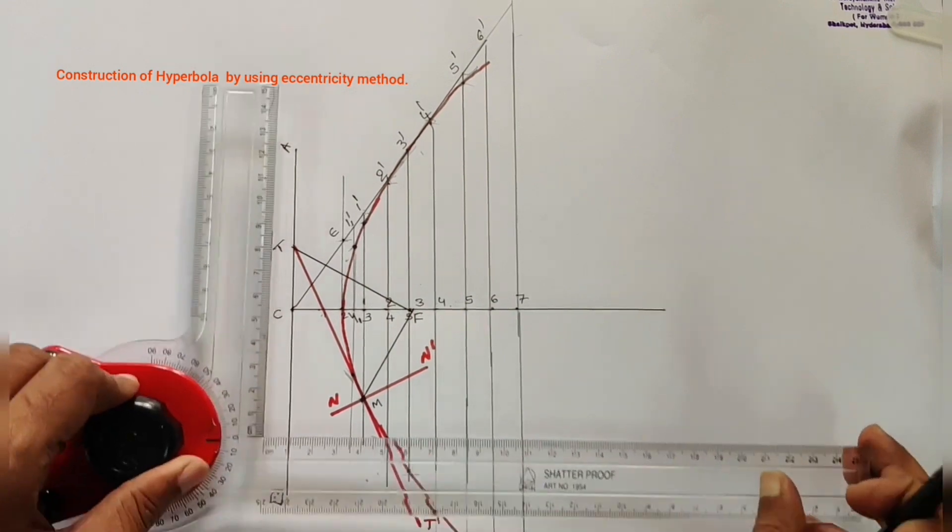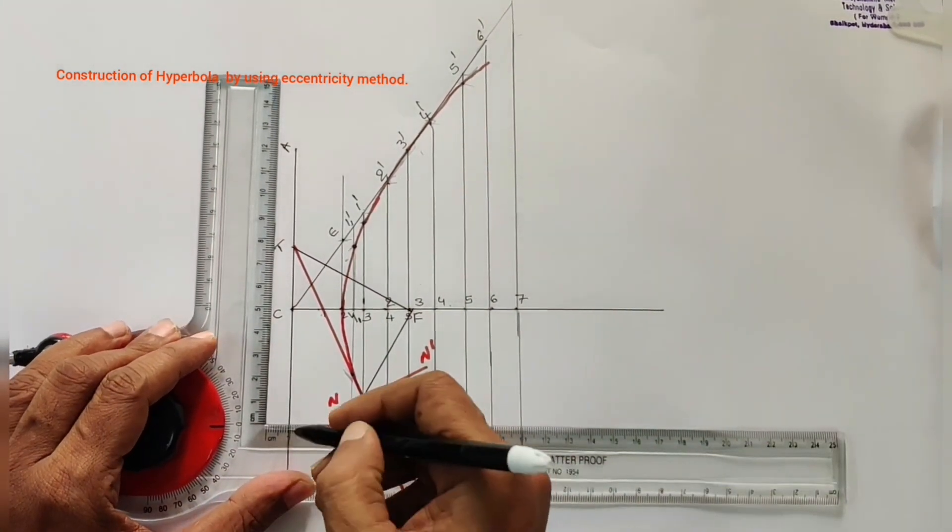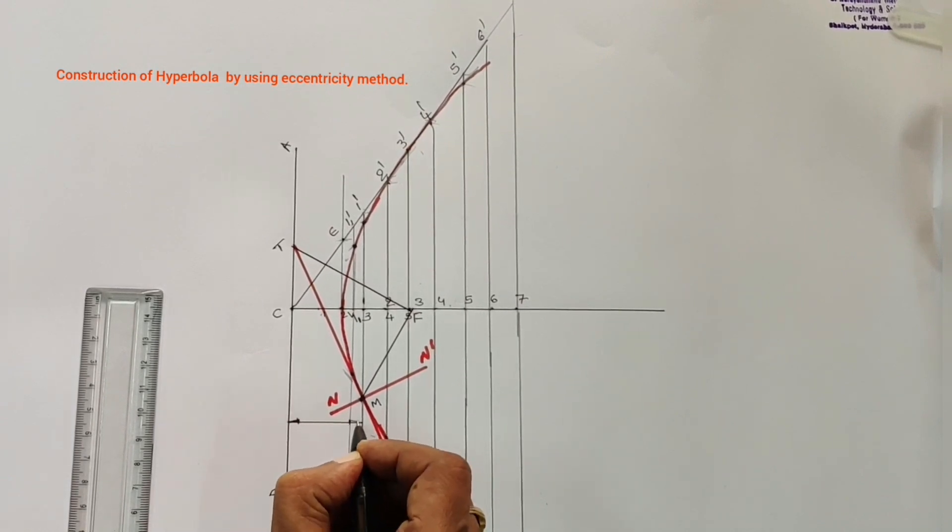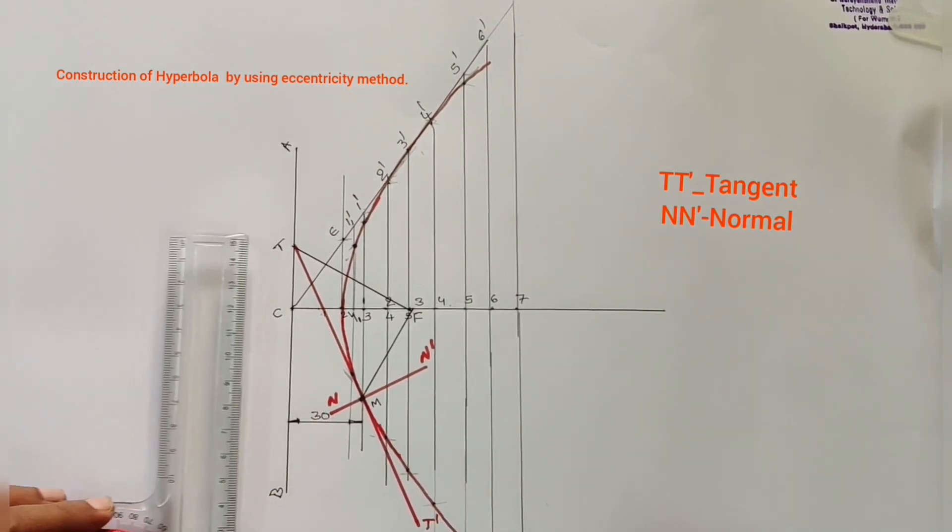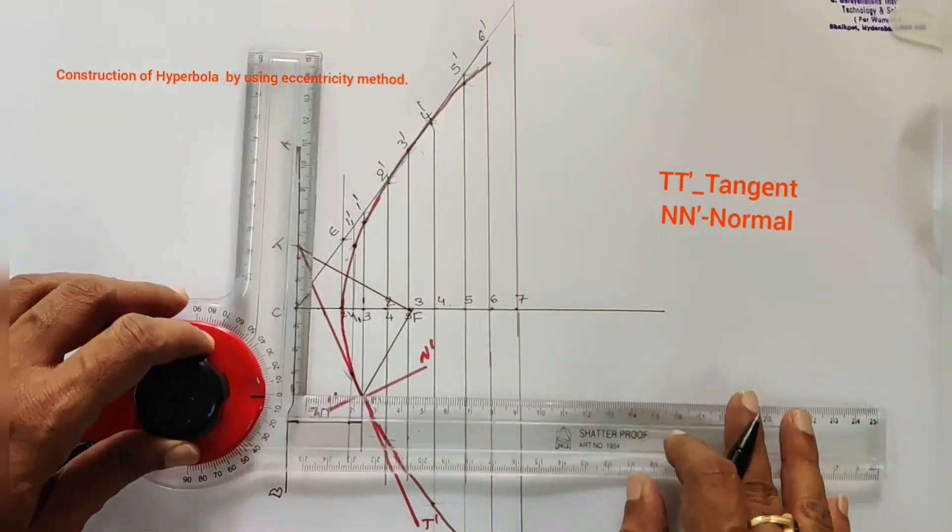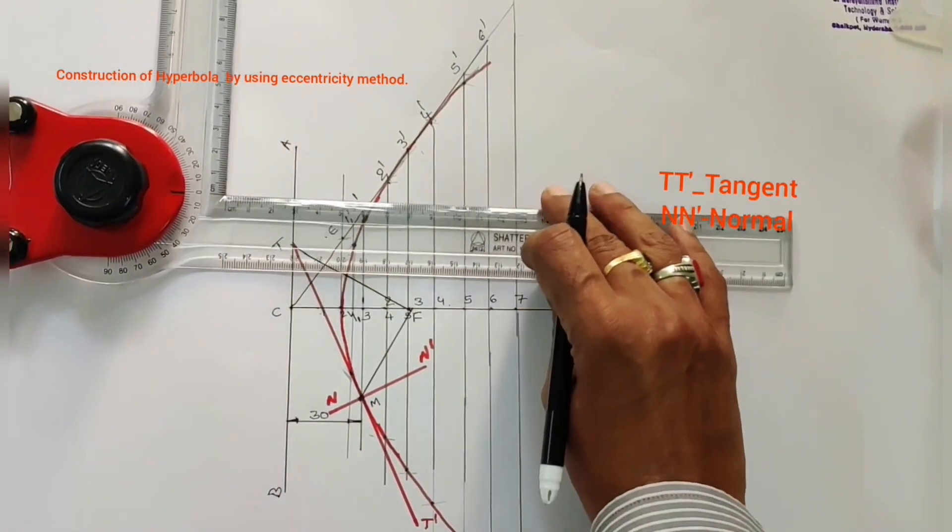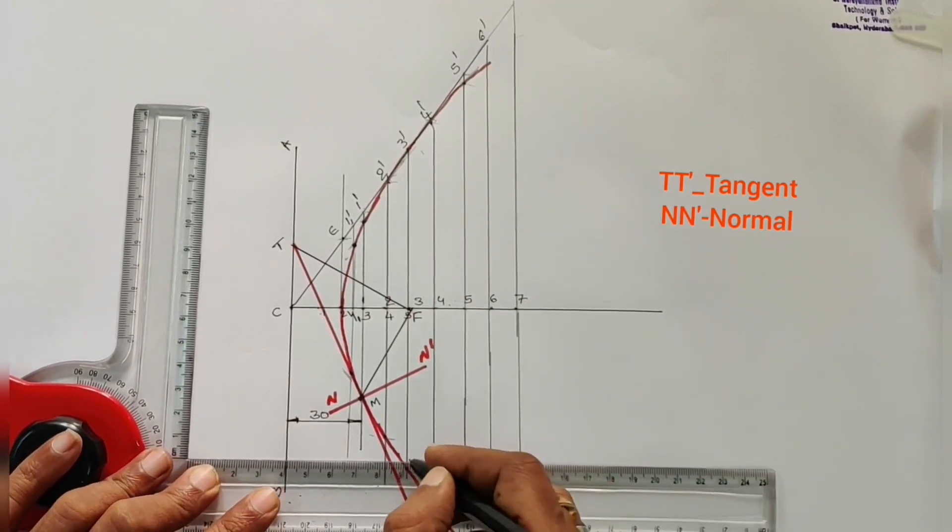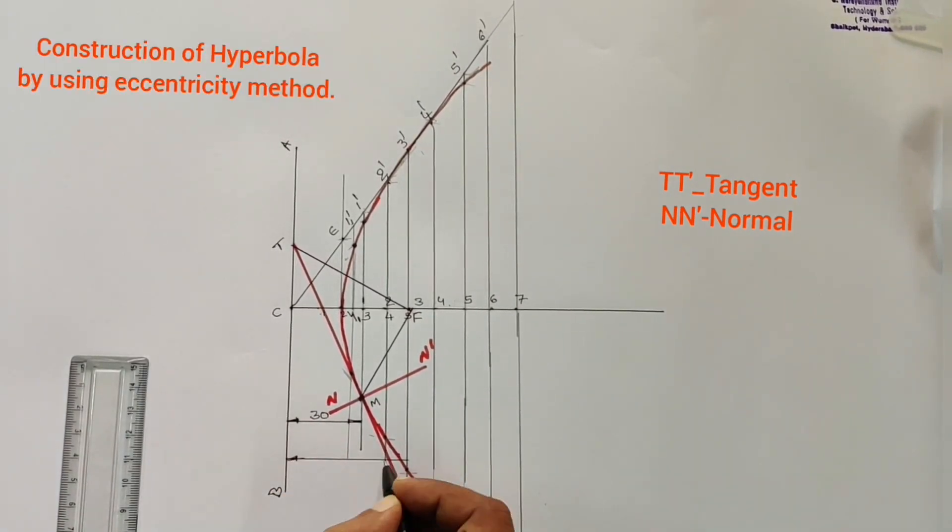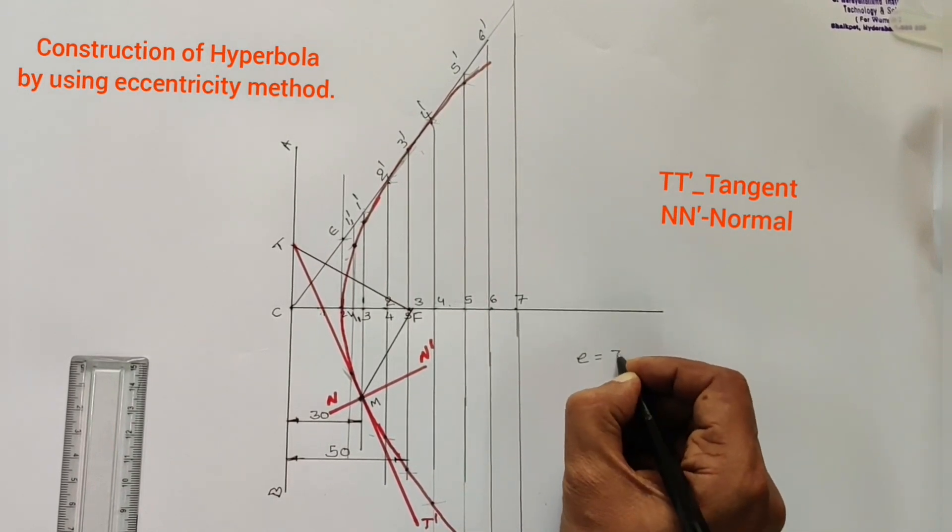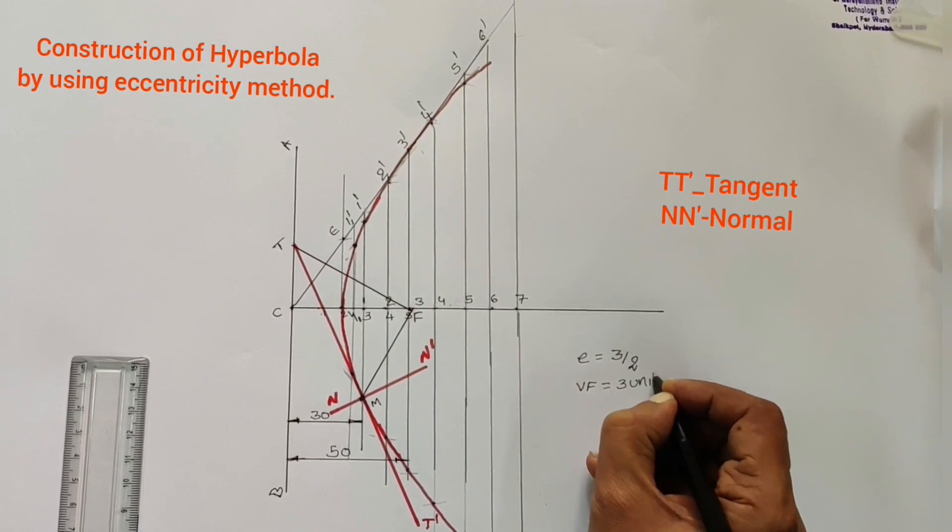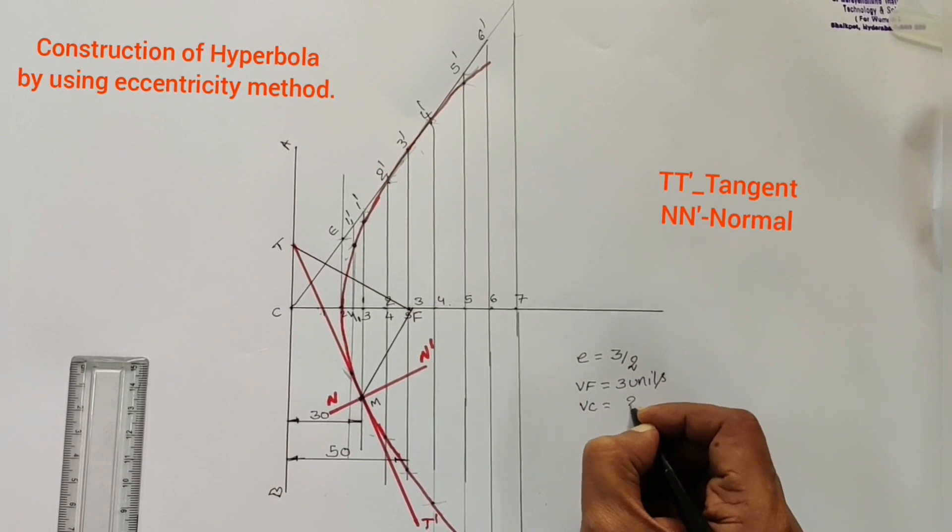Then, we can do the dimensioning. Here, normal and tangent point from directrix is given as 30 mm from the directrix. So, it is 30 mm from F to directrix. Distance is given as 50 mm. Here, E is equal to 3 by 2 and VF is equal to 3 units. And, VC is equal to 2 units.